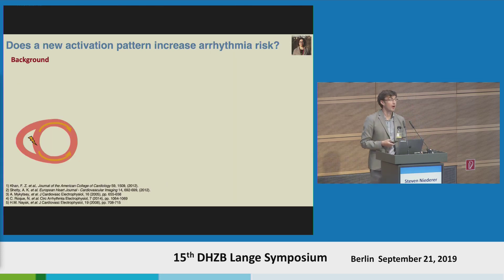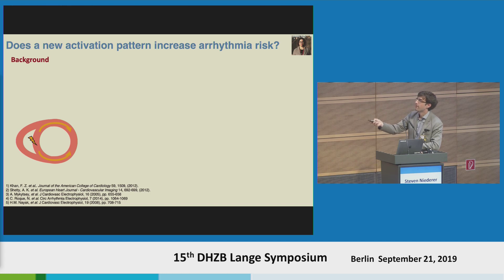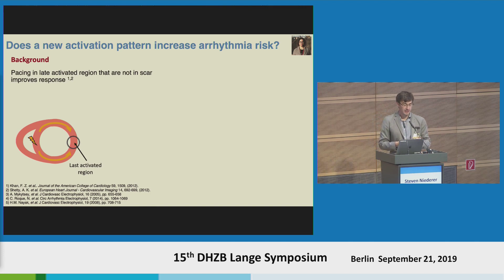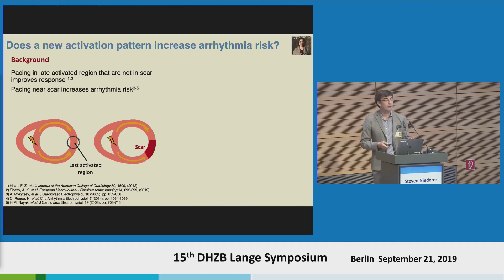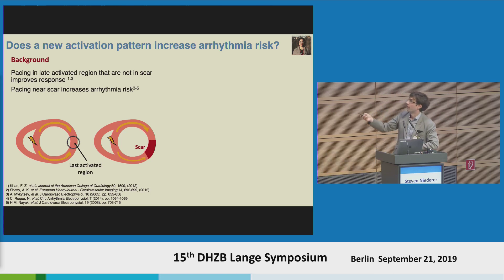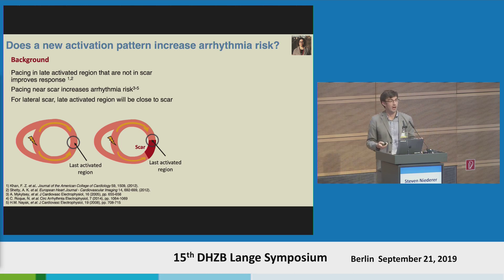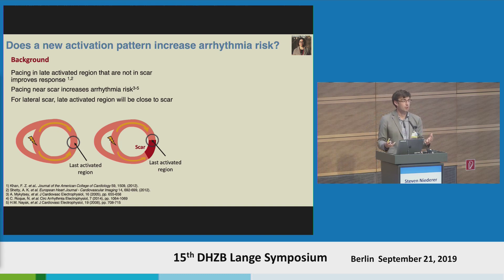Another question is working out where to pace. With a standard left bundle branch block activation pattern, we have activation in the septum and a late activated region in the lateral wall. We know that pacing in late activated regions with no scar is likely to improve response. However, if we pace near scar, that's likely to increase arrhythmogenic risk. So if the lateral wall is both late activated and close to scar, the question becomes: what is the balance between pacing in a late activated region while avoiding increased arrhythmogenic risk?